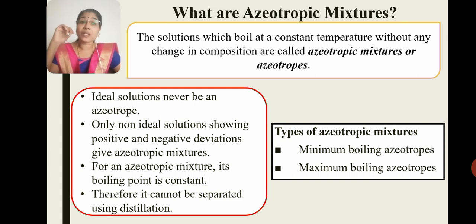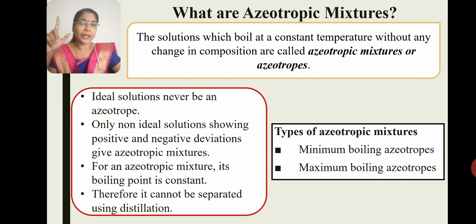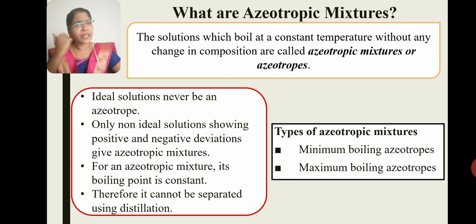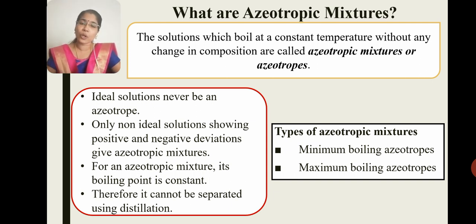This azeotropic mixture — the first thing we will learn is ideal solutions. Ideal solutions can never be an azeotrope. What is an ideal solution? Ideal solutions are those which obey Raoult's law.